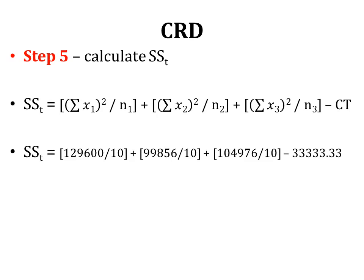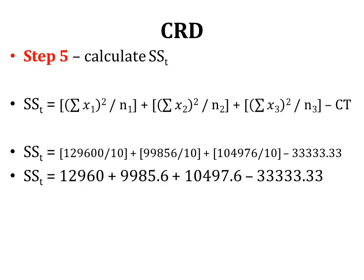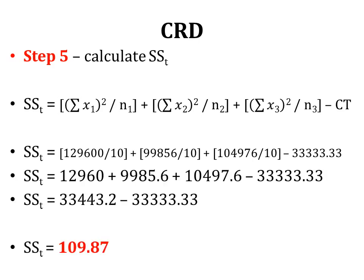Step five is to calculate the Treatment Sum of Squares (between samples): SS_Treatment = [(ΣX₁)²/n₁ + (ΣX₂)²/n₂ + (ΣX₃)²/n₃] − CT. Solving these values gives SS_Treatment = 109.87.